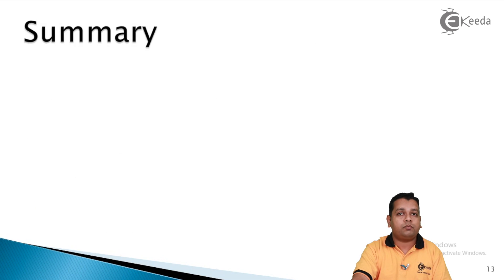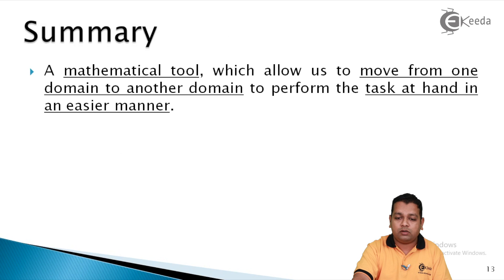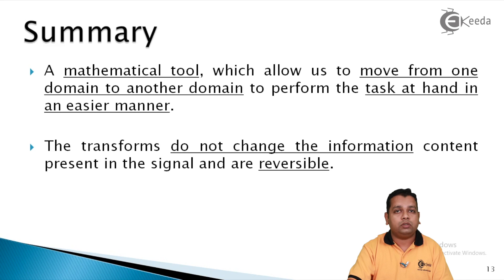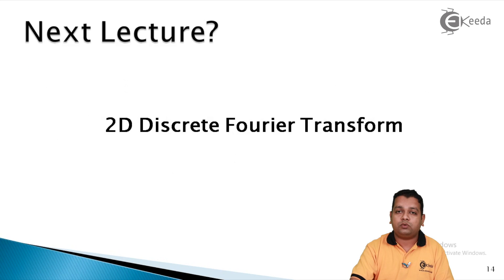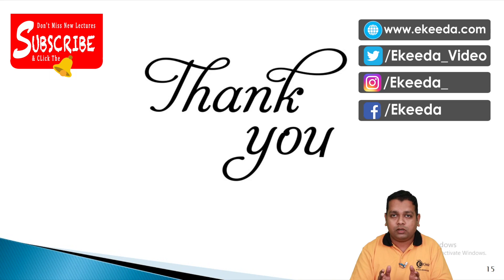I hope the need of transforms for image processing is much clearer now. In summary, a transform is a mathematical tool which allows us to move from one domain to another to perform the task at hand in a more easier manner. Transforms do not change any information content present in the signal — the image — and they also provide reversibility, allowing us to switch back from the frequency domain to the time domain. The next lecture will cover the two-dimensional discrete Fourier transform. If you would like more details, please subscribe to the Ekida channel. Thank you.